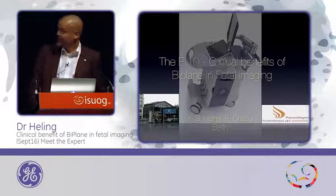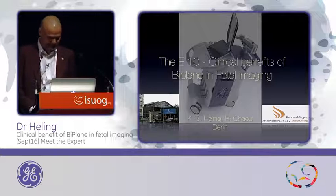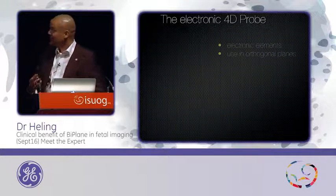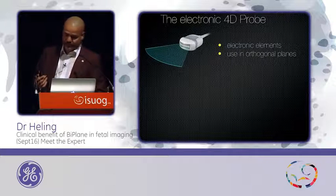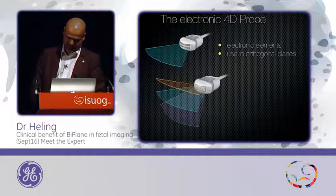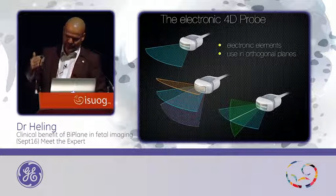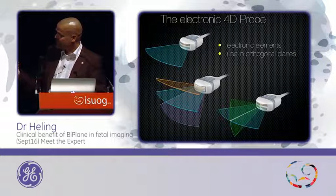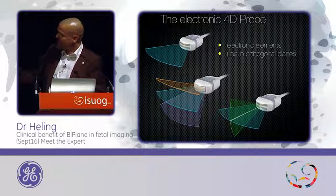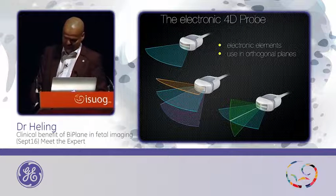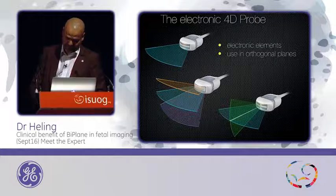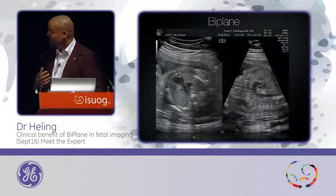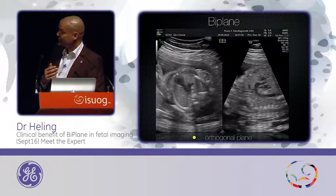I want to speak about BiPlane. The electronic 4D probe offers you the chance to sense the ultrasound beam not only in one plane, but you can switch — because of the electronic steering of the transducer — into an orthogonal plane. You have the chance to see the 90-degree perpendicular plane. I will give you some clinical examples, and I think one of the major examples is the visualization of the aortic arch.